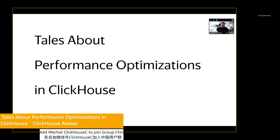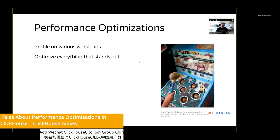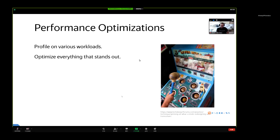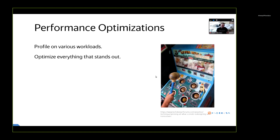On performance optimizations in ClickHouse. So how do I see performance optimizations? It looks like this game - did you play it? I did not. But I feel this game looks very similar to performance optimizations. It's the game where you need to smash some rats with a hammer. So how do I perform performance optimization? I just run and profile my code on multiple different workloads, look at the profile, and optimize everything that stands out. Just smash everything. And I will tell you a little about some of these optimizations.